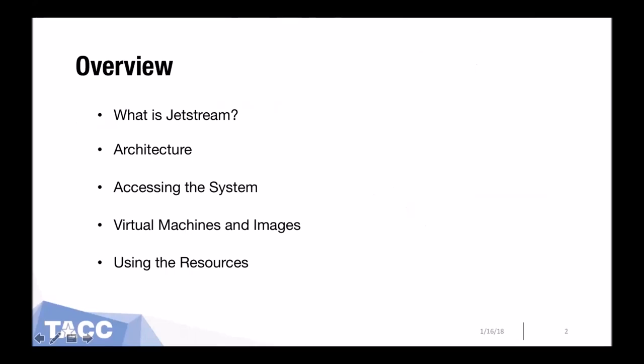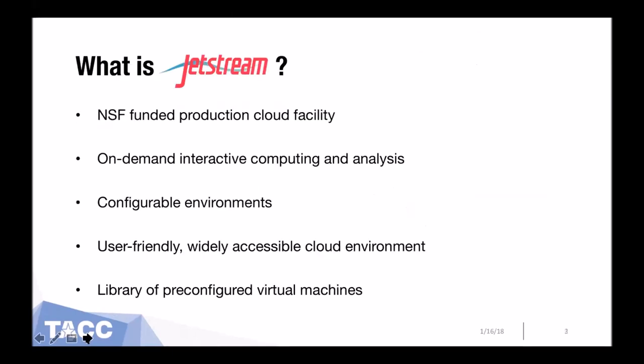Here's a quick overview. I'm going to cover what Jetstream is and how it's set up, as well as how to access the system, and then go slightly more in depth about how to select and use images and make the most of your allocation. What is Jetstream? Jetstream is NSF's first production cloud facility. In short, this means you can access high-performance computing via your web browser. It provides on-demand computing resources to users in need of interactive sessions. Most traditional HPC computing is done by batch jobs, which requires users to submit their work and let it run unmonitored.